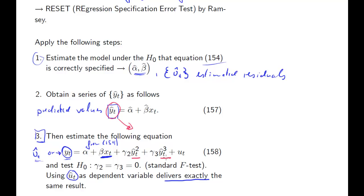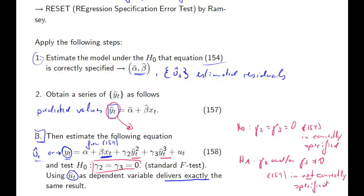Now, our null hypothesis: if our model initially is correctly specified, then these two terms should be insignificant, and it turns out that if our model is not correctly specified, that one of these terms is likely to be significant. That means our null hypothesis is going to be H_0: gamma_2 equals gamma_3 equals zero, and that is equivalent to saying equation 154 is correctly specified. The alternative is that gamma_2 and/or gamma_3 are unequal to zero, that's equivalent to saying model 154 is not correctly specified.